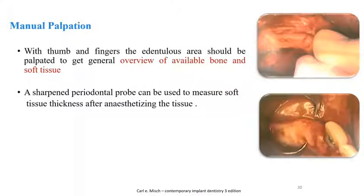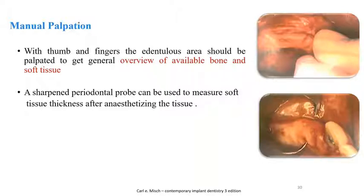For manual palpation, using thumb and fingers, the edentulous area can be palpated to get a general overview of the available bone and soft tissue. A sharpened periodontal probe can be used to measure the soft tissue thickness after anesthetizing the tissue.